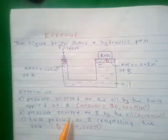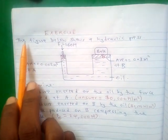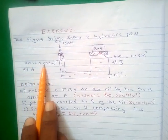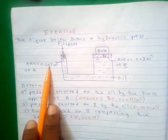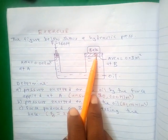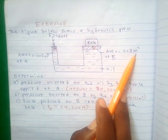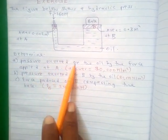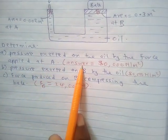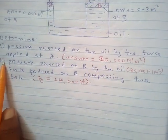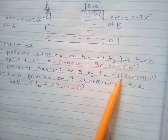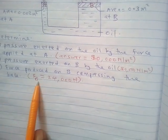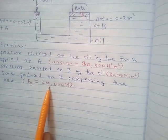There are exercises for students to try in their own free time. The figure shows a hydraulic press with force at point A being 160 Newton, area at the smaller piston A being 0.002 square meter, and area at point B being 0.8 square meter. Determine: part A, the pressure exerted on the oil by the force at point A (expected answer: 80,000 Newton per meter square); part B, the pressure exerted on B by the oil (expected answer: 80,000 Newton per meter square); and part C, the force produced on B compressing the bale (expected answer: 24,000 Newton).